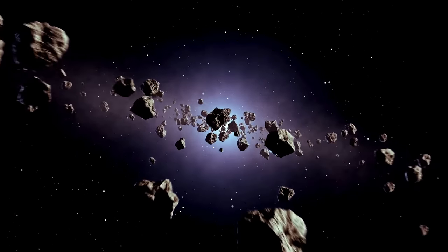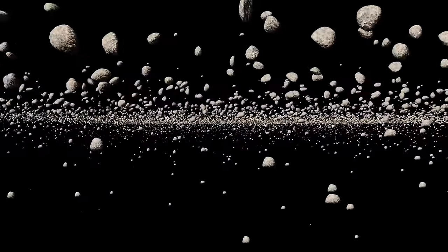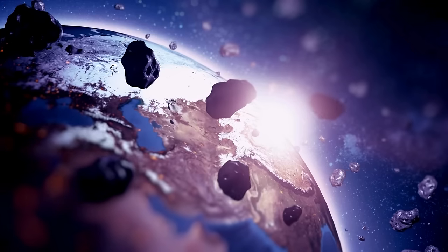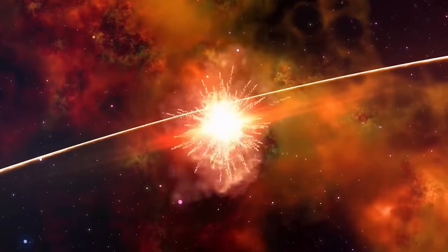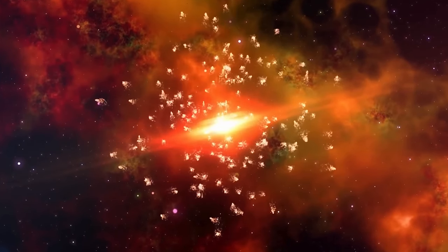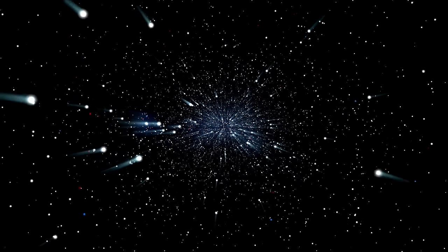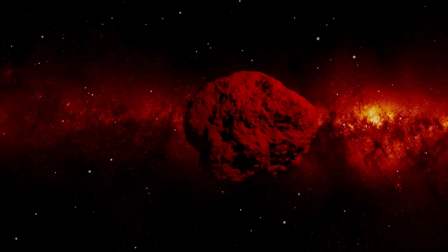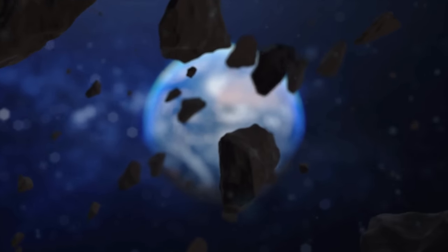When Oumuamua showed up, telescopes all over the world eagerly watched it to gather as much information as they could during its short visit. It was at this point, scientists discovered that Oumuamua had been wandering alone through the Milky Way galaxy for hundreds of millions of years before its visit. As Oumuamua left our solar system, it accelerated faster than expected, surpassing the influence of gravity alone.